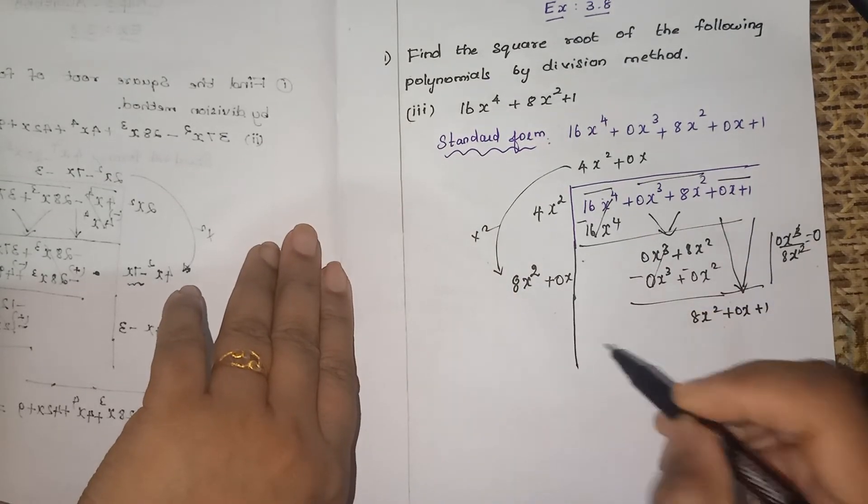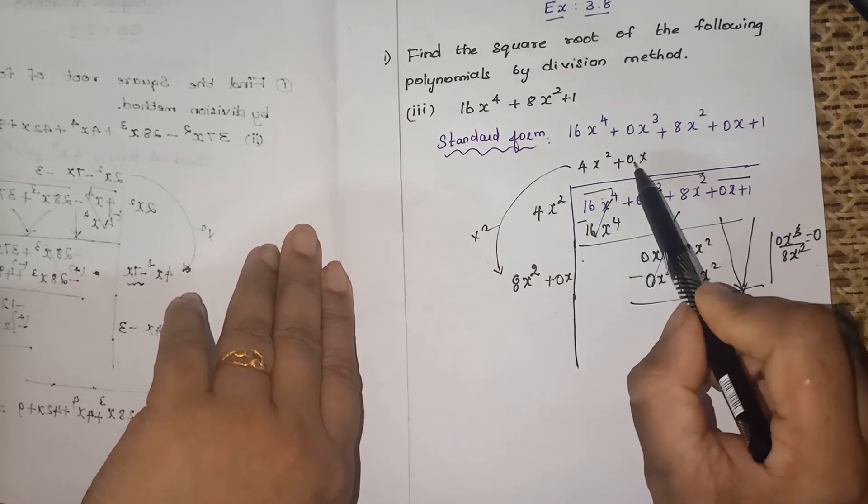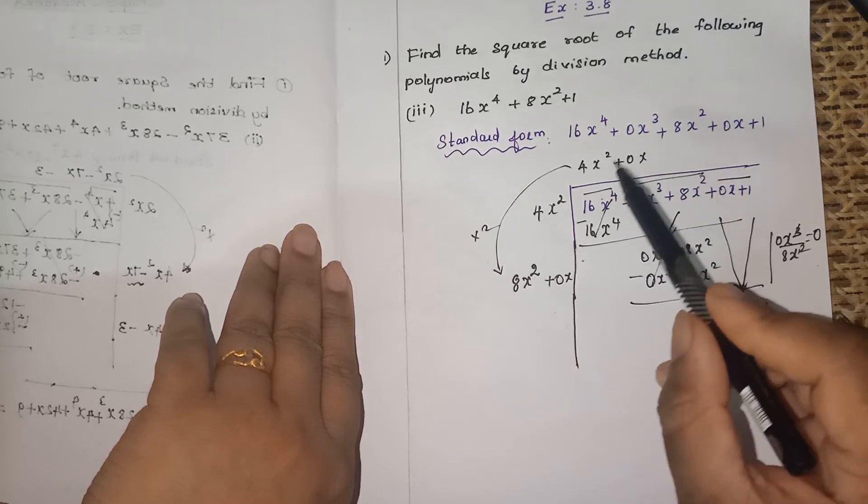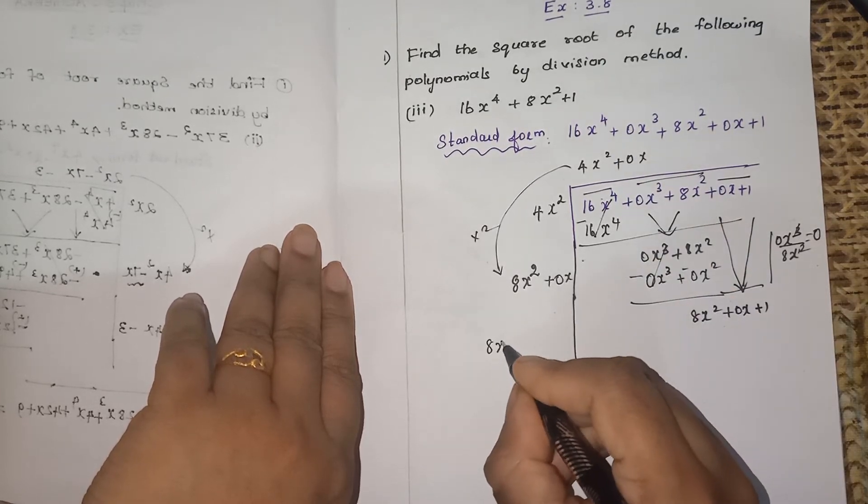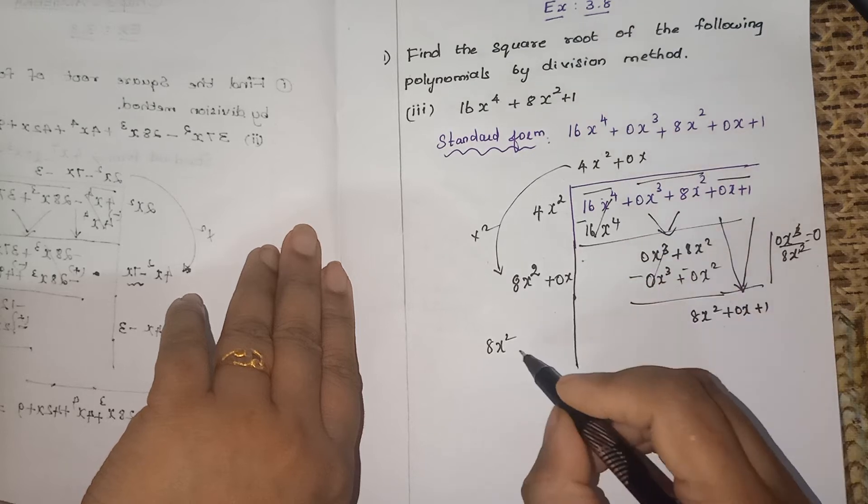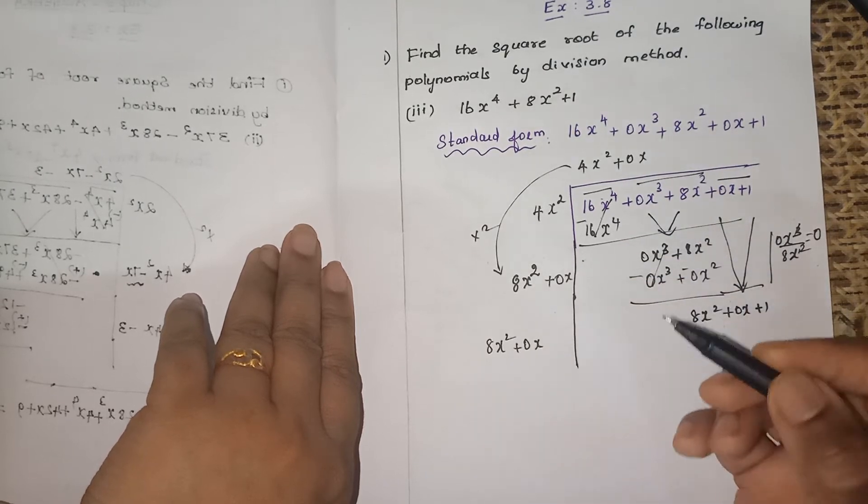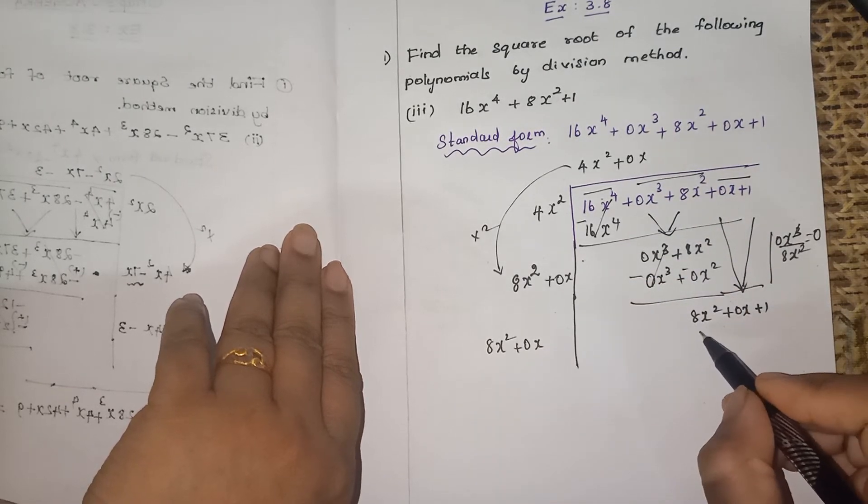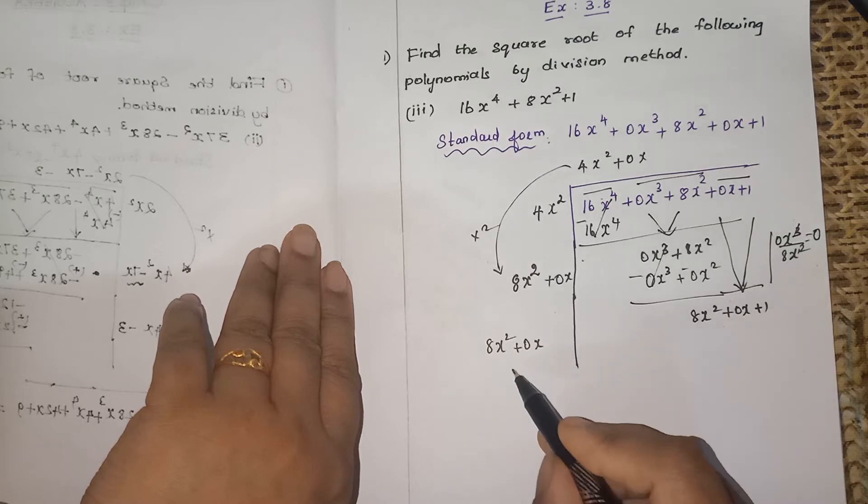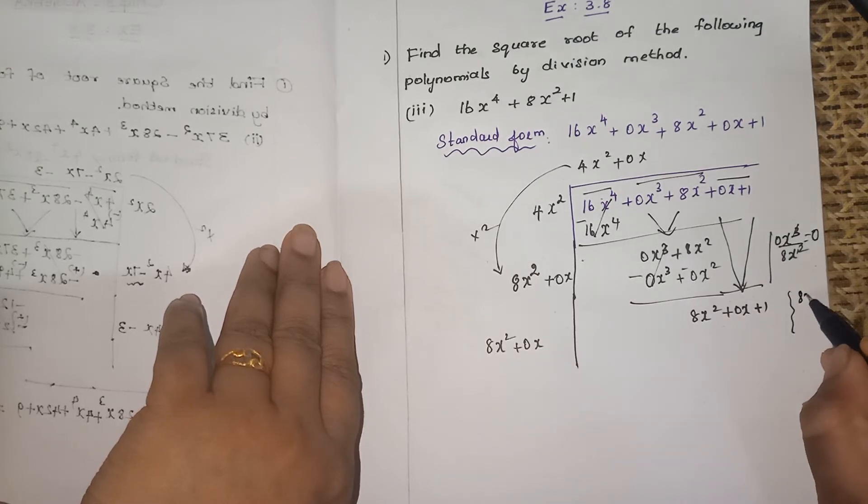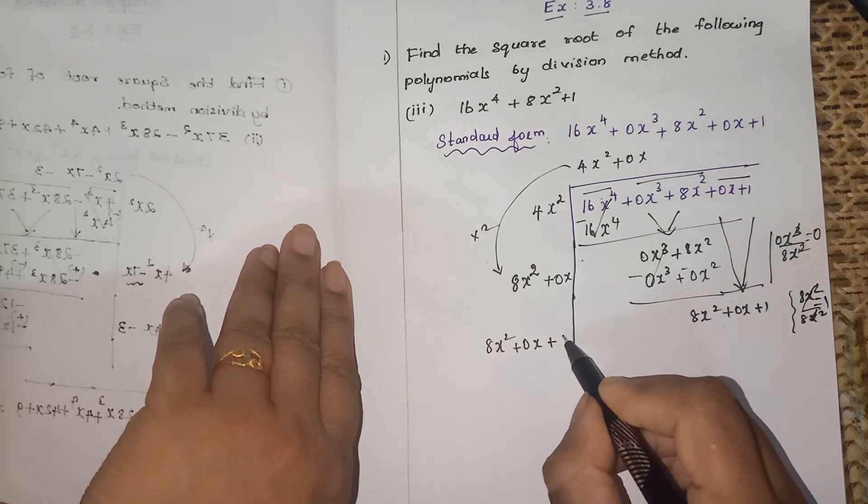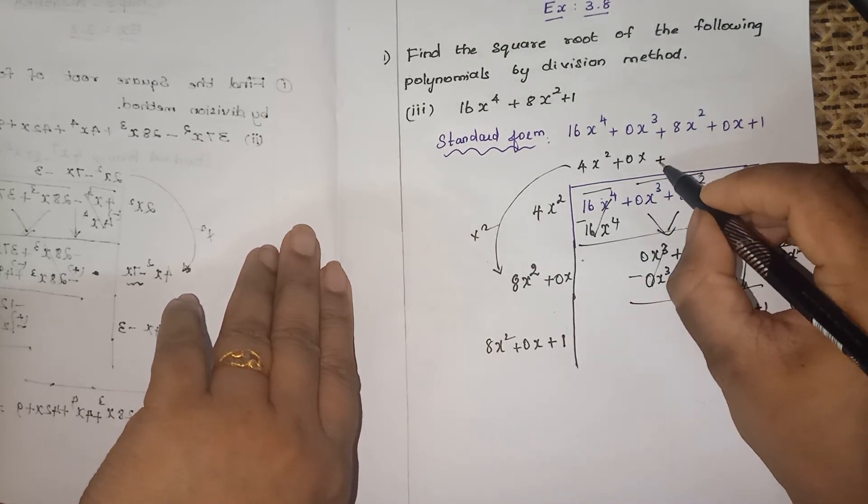Now what is the next term? You have to multiply these 2 terms into 2, so 4 times 2 is 8x square, plus 0x into 2 is 0x. Next, you will get the third term. How will you get the third term? 8x square divided by 8x square is 1. The third term will be plus 1.